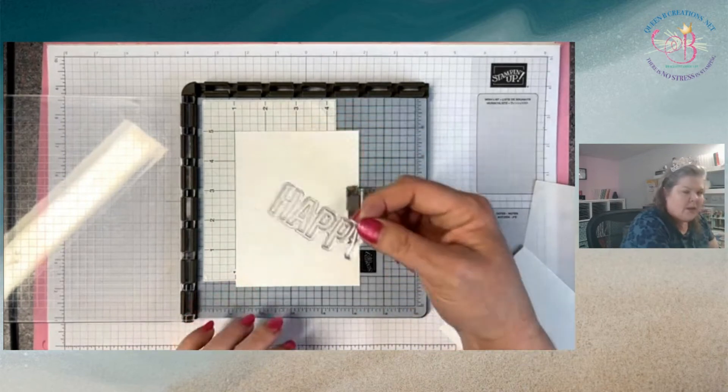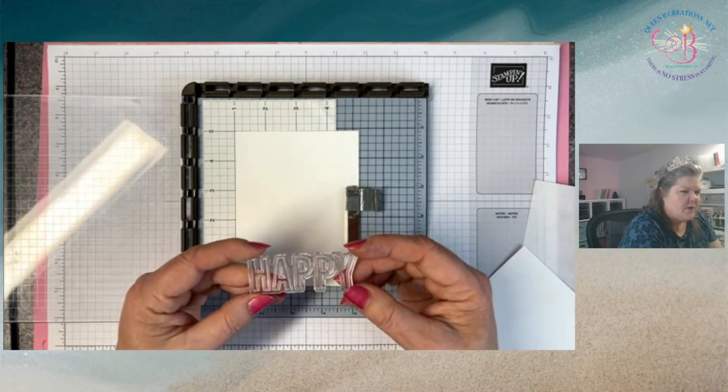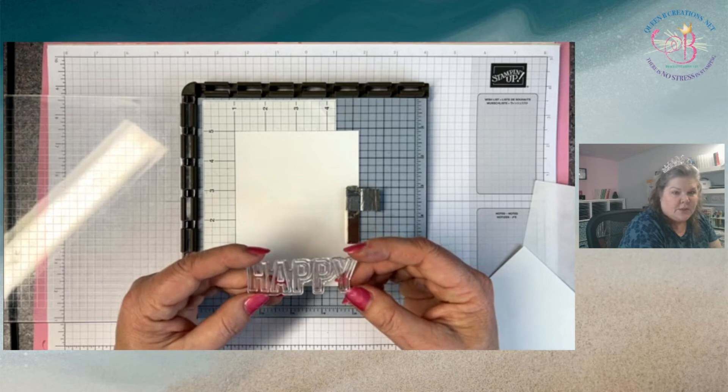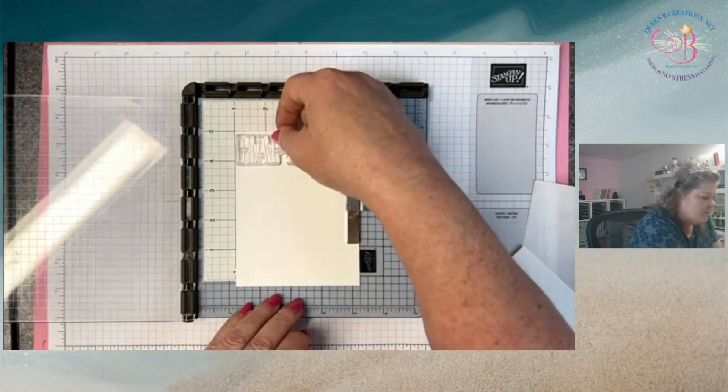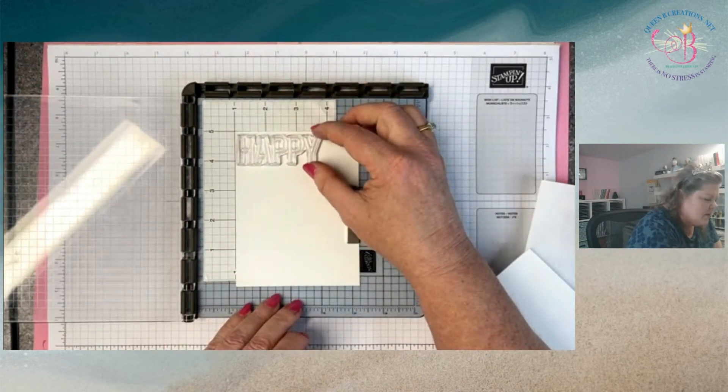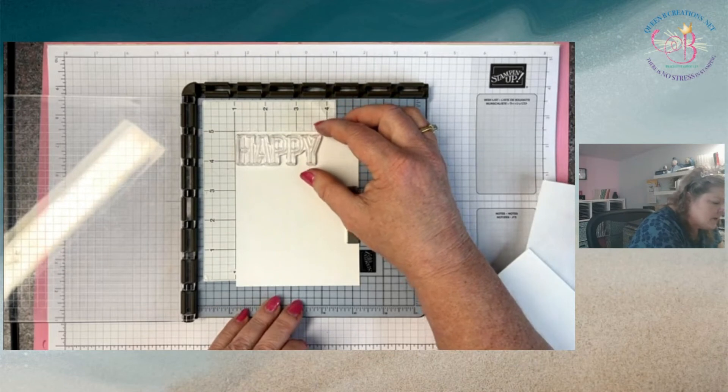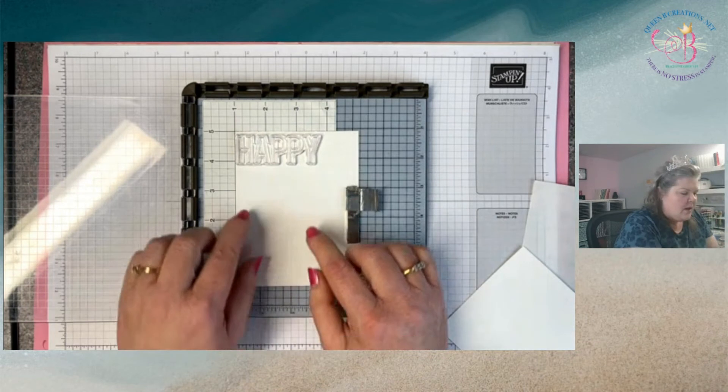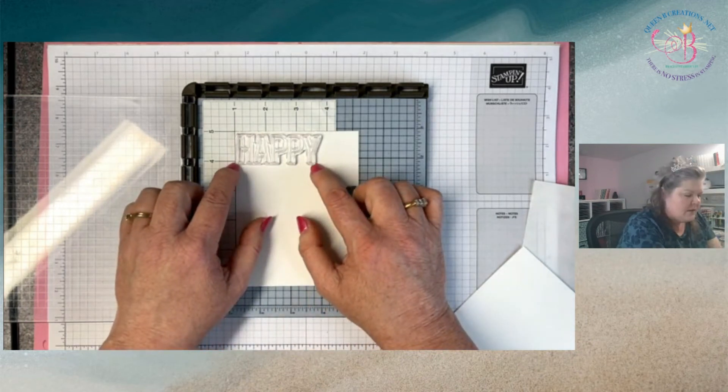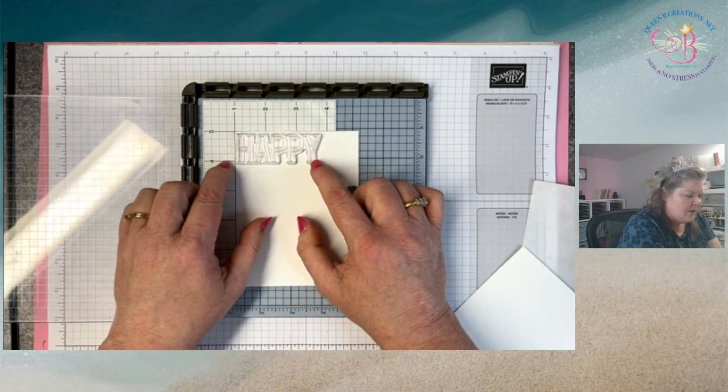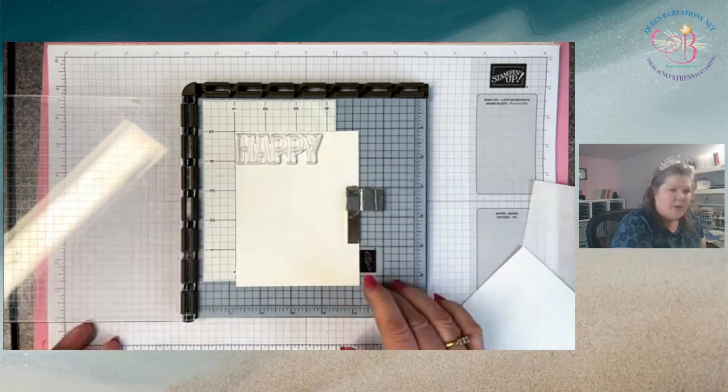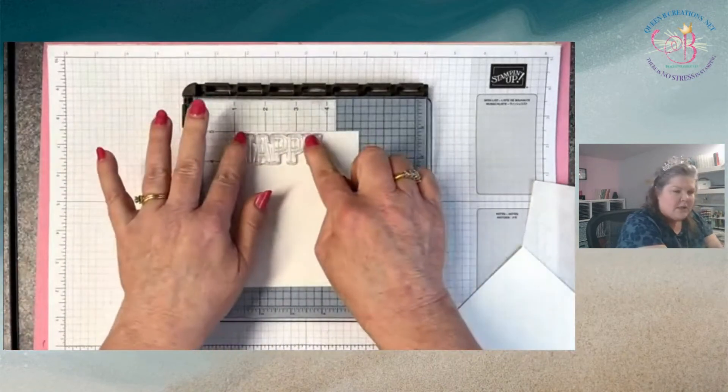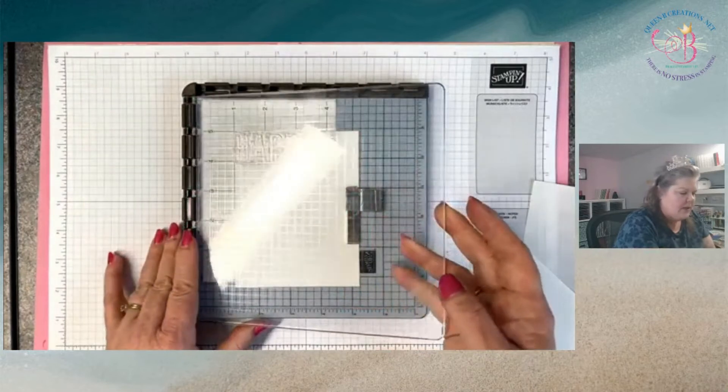I'm going to be using this stamp from our May 2022 Paper Pumpkin. I made an alternative card where I used hinge stamping and so I thought today I would show you how that works. I'm going to place my stamp on my layer where I want it to go towards the top, and then I'm going to close the platform and it's going to pick up my stamp.